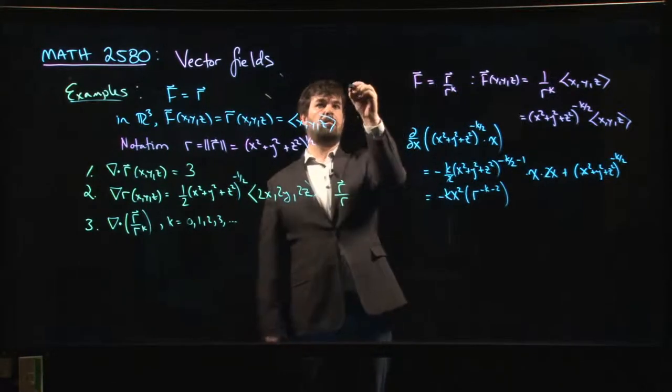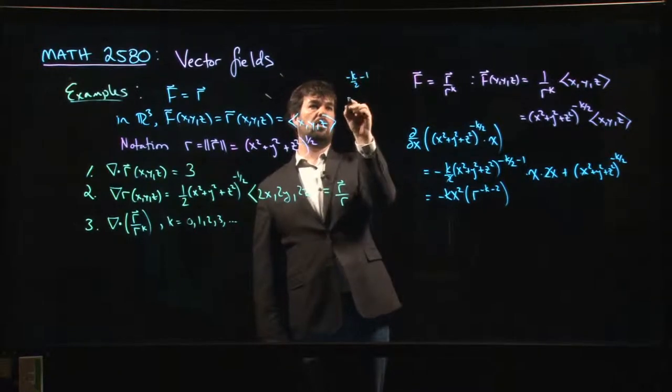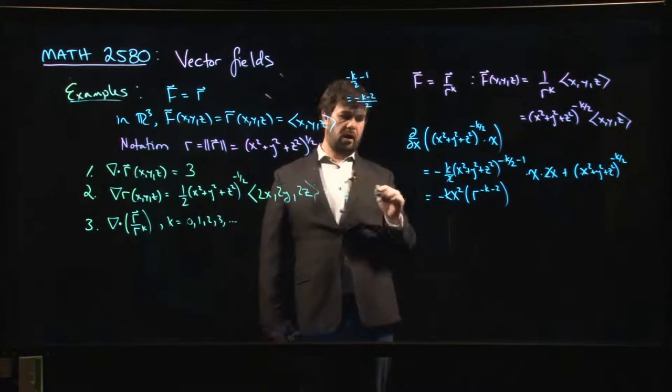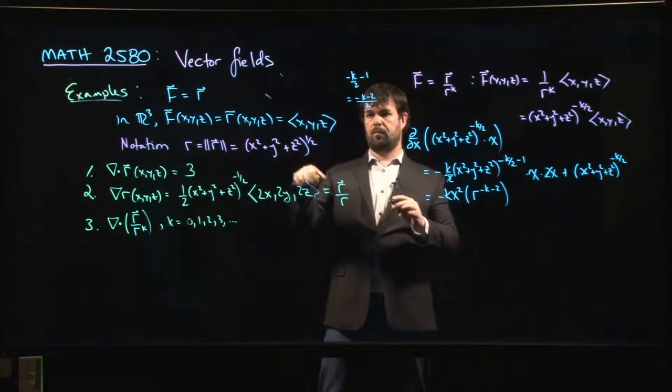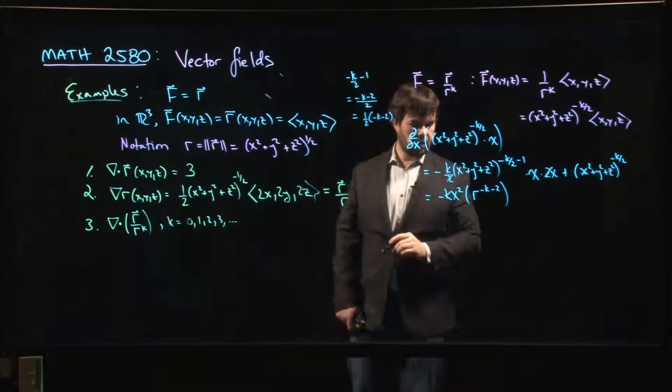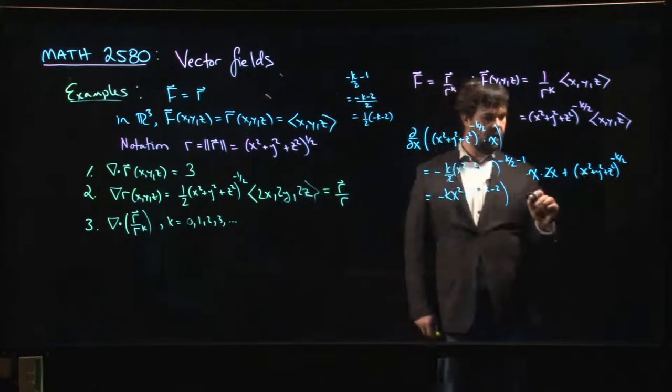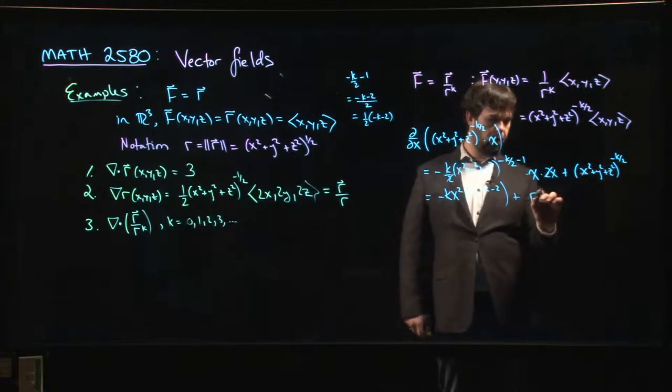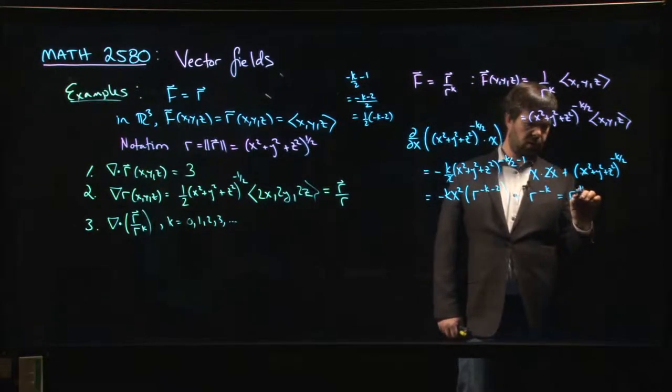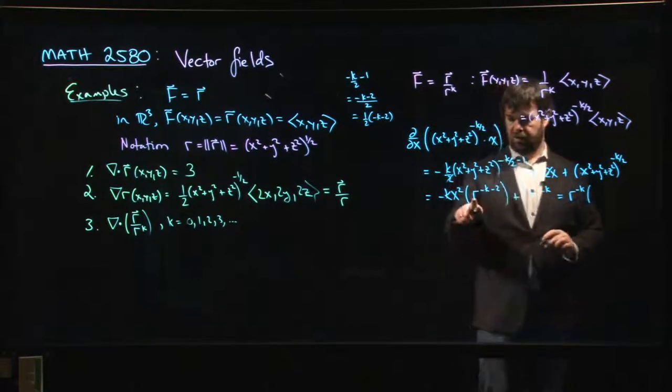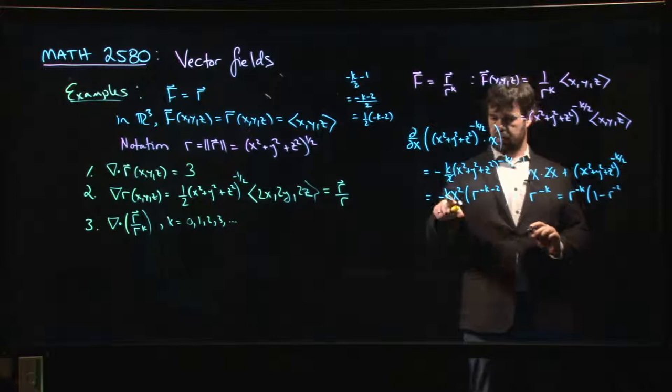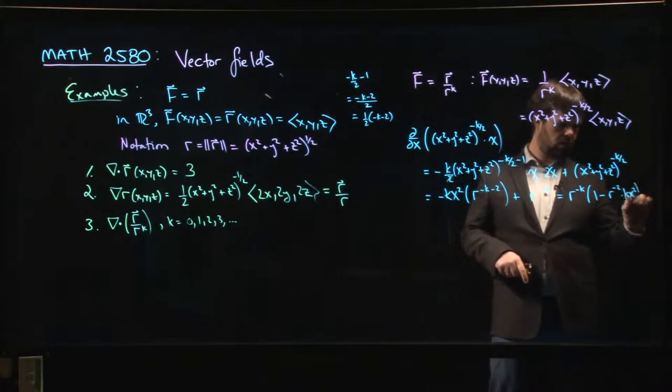Why is it that? Because minus k over 2 minus 1 is minus k minus 2 over 2, right? And remember that R is this thing to the one half. So it's one half times minus k minus 2. So that's where the minus k minus 2 comes from. So I have that, and then I just have R to the minus k. So I can actually do a little bit of factoring. I can take out R to the minus k times, well, there's going to be an, it's 1 from here, minus R to the minus 2 times kx squared.